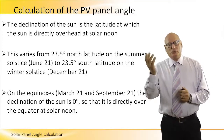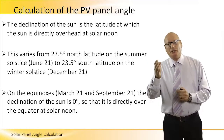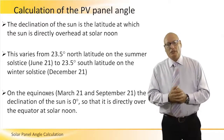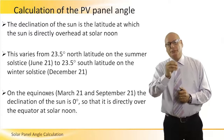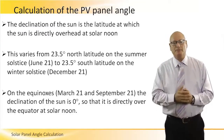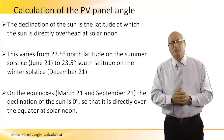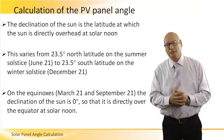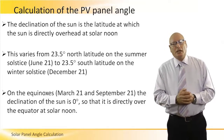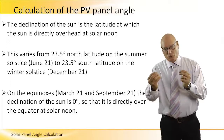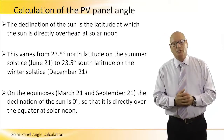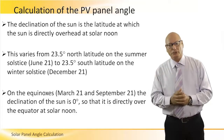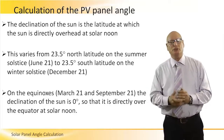The declination of the Sun, as we said before, is the latitude at which the Sun is directly overhead at solar noon. This varies from 23.5 degrees north latitude on the summer solstice, June 21st, and minus 23.5 degrees south latitude on the winter solstice, December 21st. On the equinoxes — the two days of the year, March 21 and September 21 — the declination of the Sun is zero, meaning it is directly over the equator at solar noon.